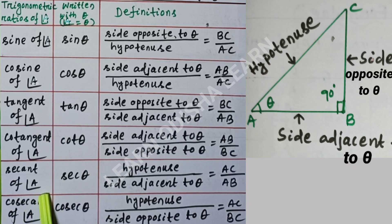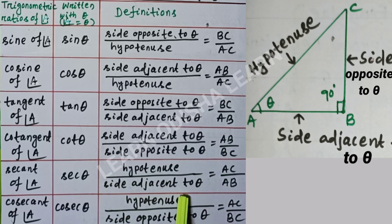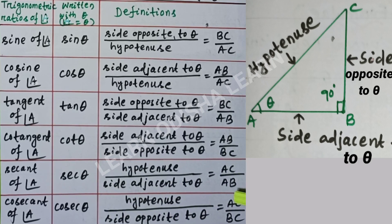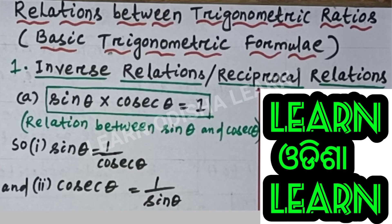Secant of angle A — sec theta — is hypotenuse divided by side adjacent to theta, that is AC by AB. Cosecant of angle A — cosec theta — is defined as hypotenuse divided by side opposite to theta, that is AC by BC.